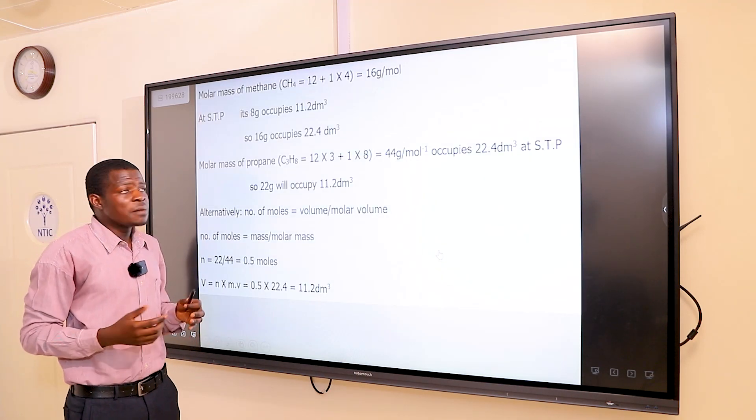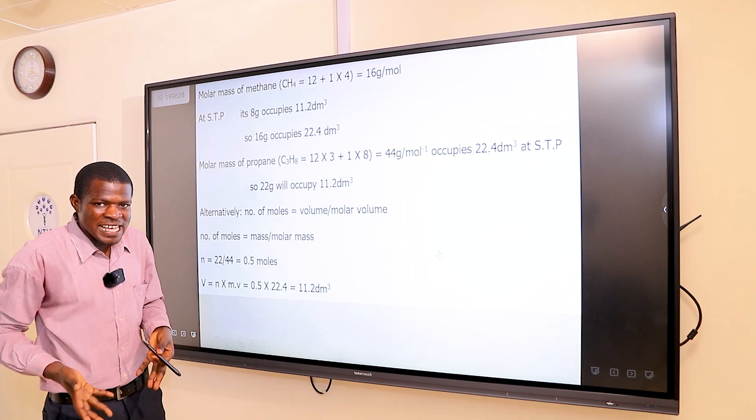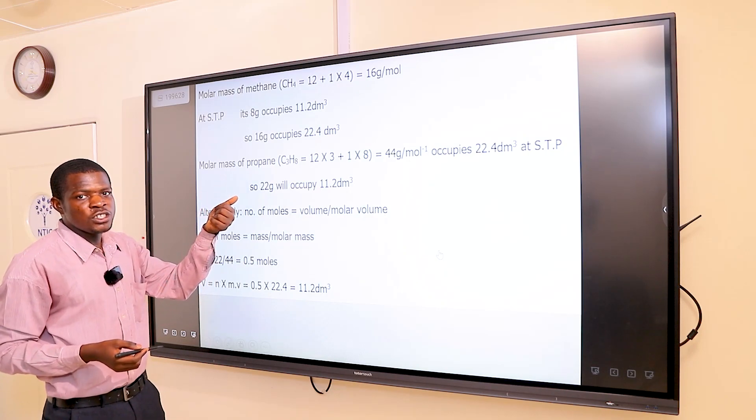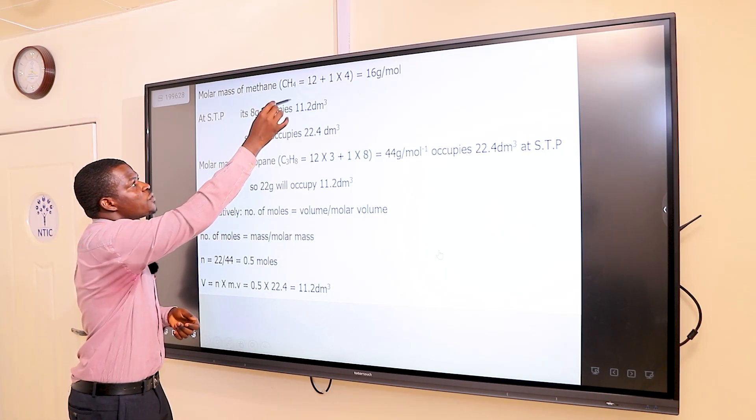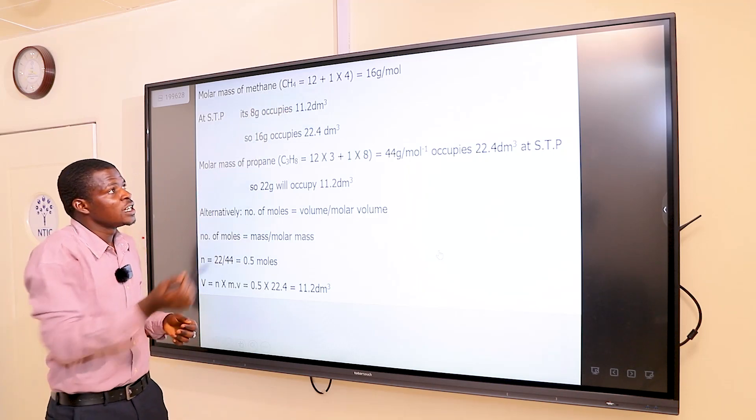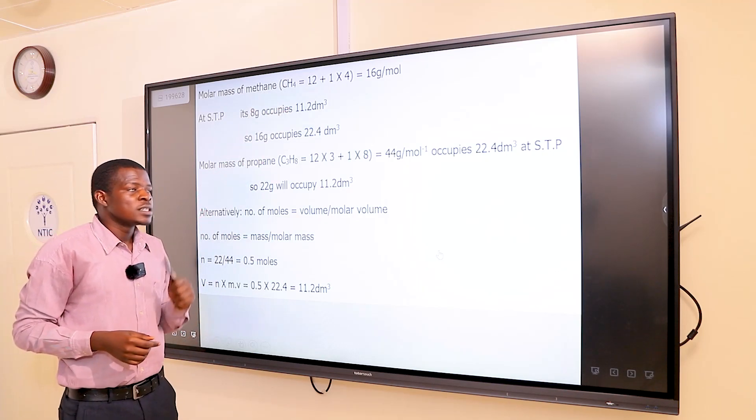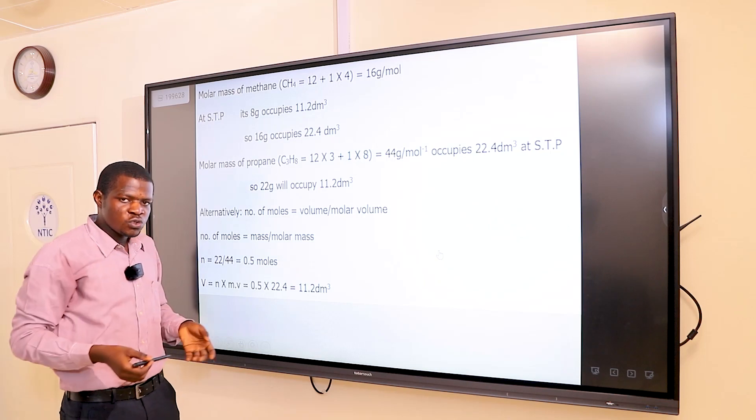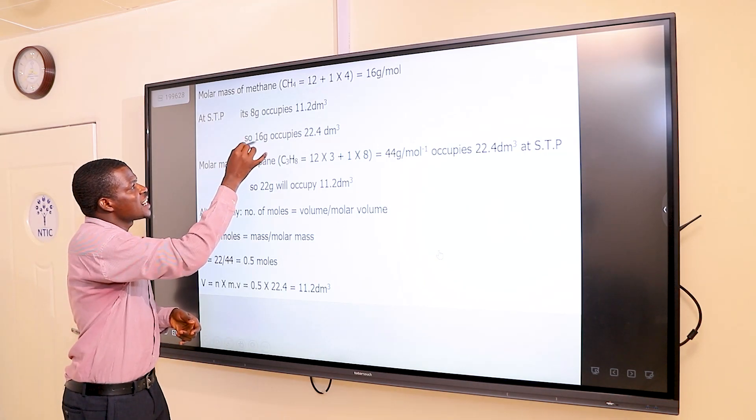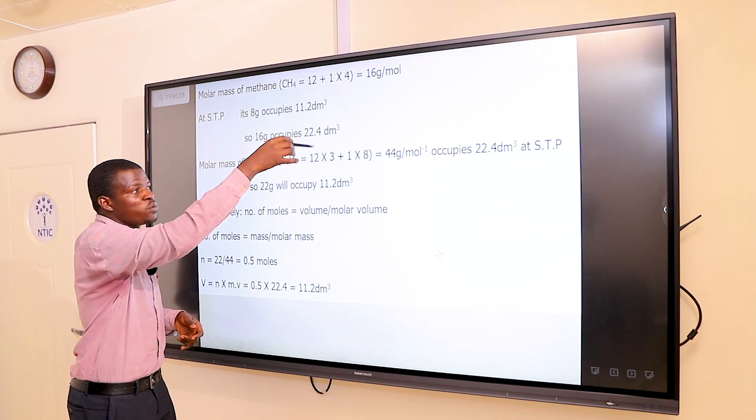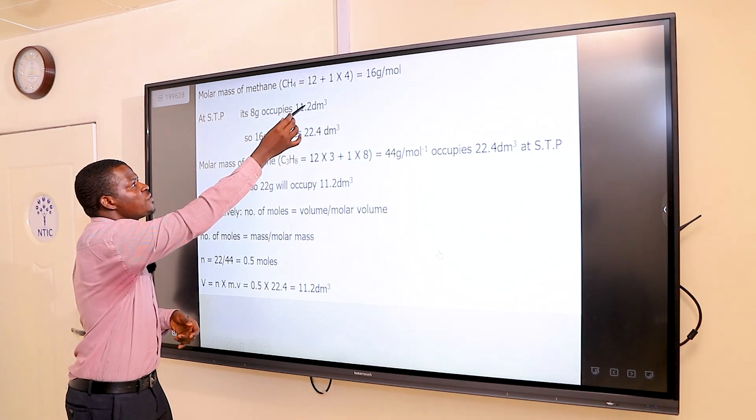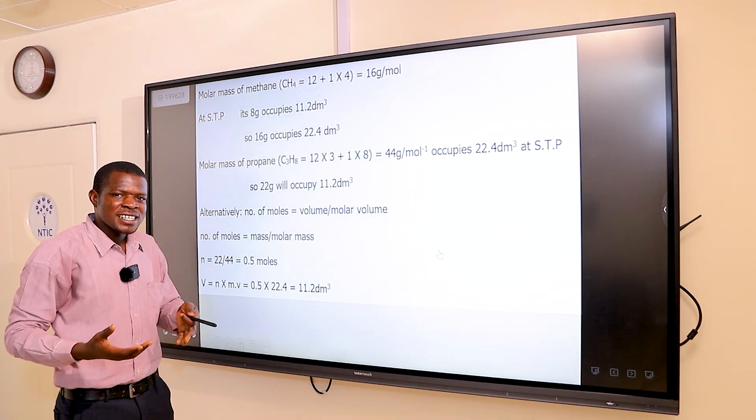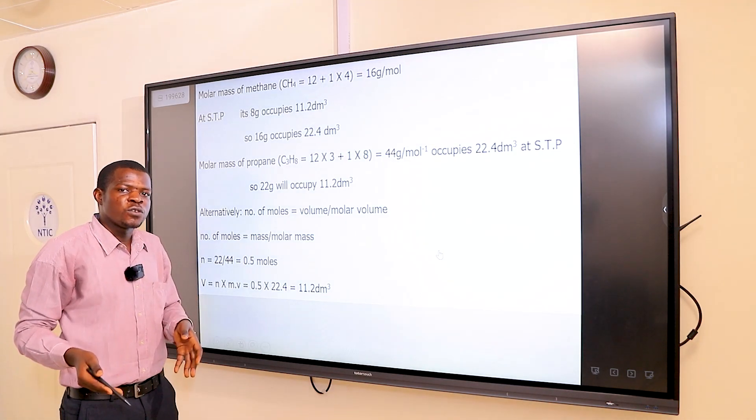The molar mass of methane, CH4, can be calculated as: carbon has an atomic mass of 12, hydrogen has an atomic mass of 1. So 12 plus 1 times 4 gives us 16 grams per mole. From the question, we were told that 8 grams of methane occupies 11.2 dm³. Therefore, 16 grams will occupy X. If we solve for X, we have 16 times 11.2 over 8, and that's 22.4 dm³.